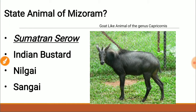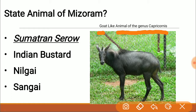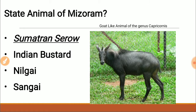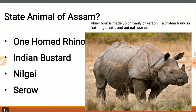The state animal of Mizoram is a goat-like animal of the genus Capricornis. It looks like a goat but is slightly thinner and taller — it is called the Serao, specifically the Sumatran Serao. Since it lives in hilly areas, it has more endurance for that kind of terrain.